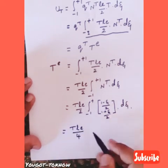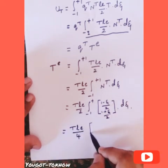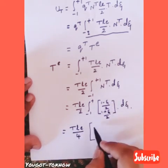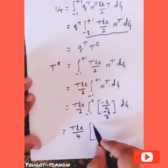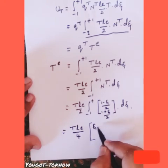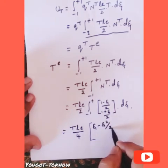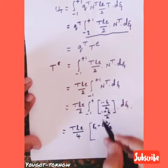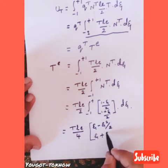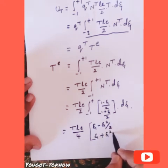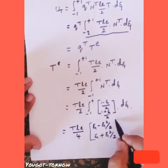Taking the common factor outside, we have t·L_e/4. The integration of (1 minus zeta) gives zeta minus zeta²/2, and the integration of (1 plus zeta) gives zeta plus zeta²/2.